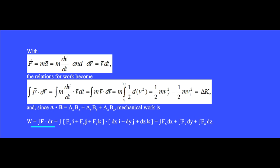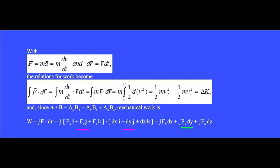When we write the work as the integration of vector F dot dr, we write vector F in terms of its components: Fx i-hat plus Fy j-hat plus Fz k-hat, dotted with dr equals dx i-hat plus dy j-hat plus dz k-hat. Using a dot b equals ax bx plus ay by plus az bz, this dot product becomes Fx dx plus Fy dy plus Fz dz. The one work integration is equivalent to three integrals.